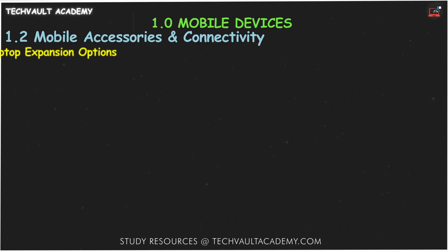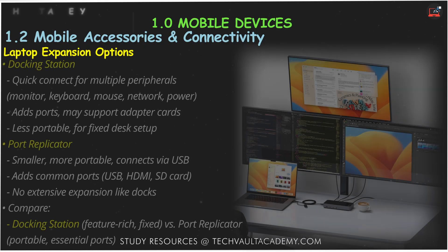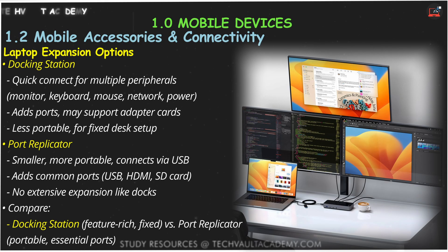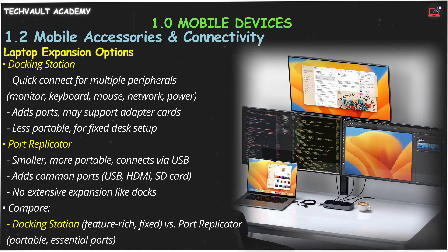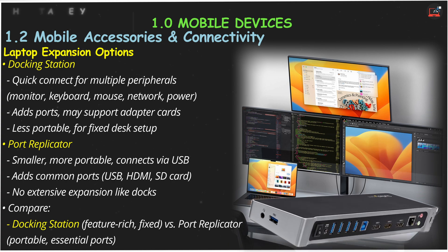Let's talk about expanding laptop connectivity, especially when moving between a desk setup and being on the go. A docking station is like a central hub for your laptop. You plug your monitor, keyboard, mouse, network cable, and power into the dock, then connect your laptop to the dock with one cable or by physically placing it on the dock. It's super convenient and often adds extra ports or even slots for full-size adapter cards — a permanent home base for your laptop's peripherals.